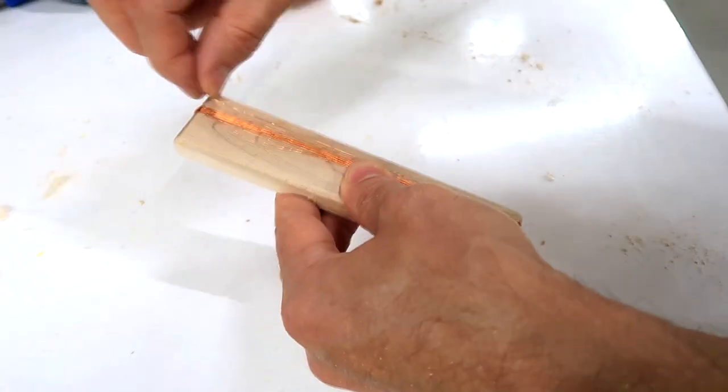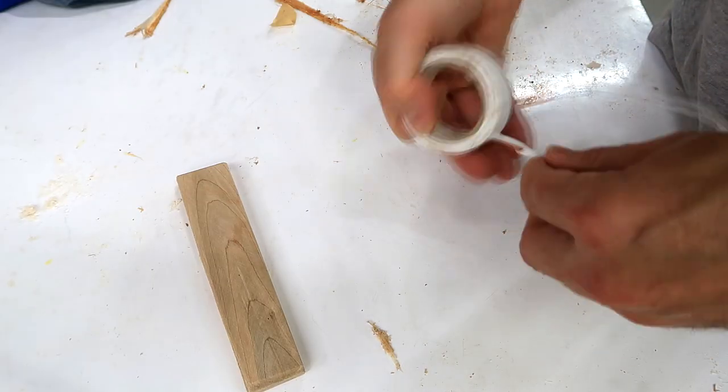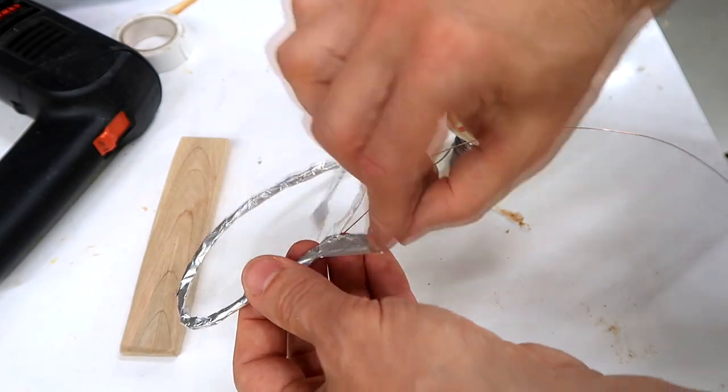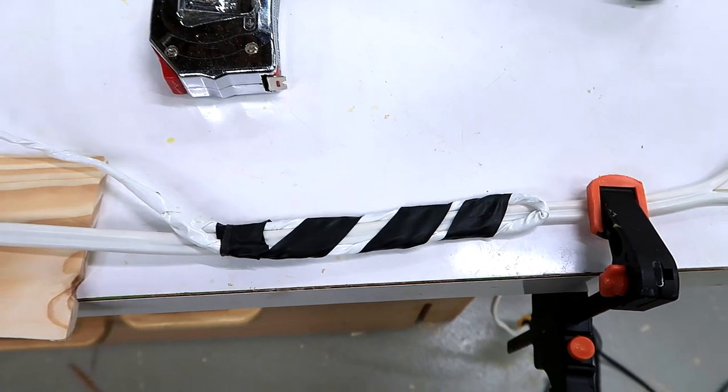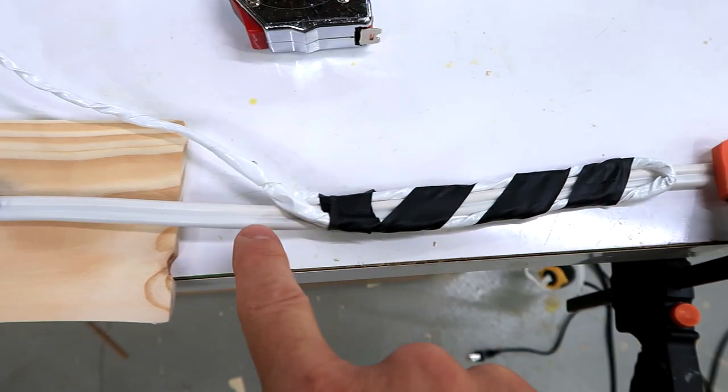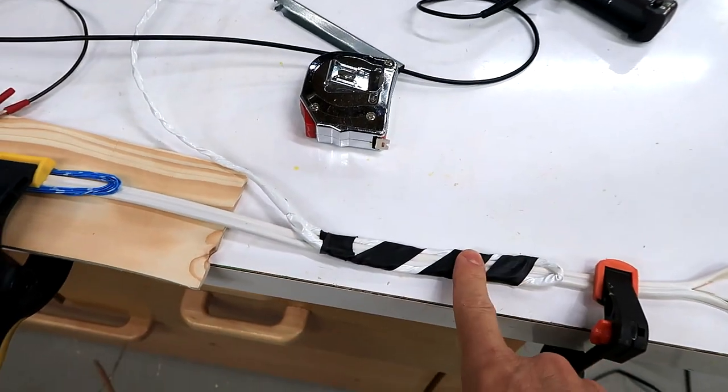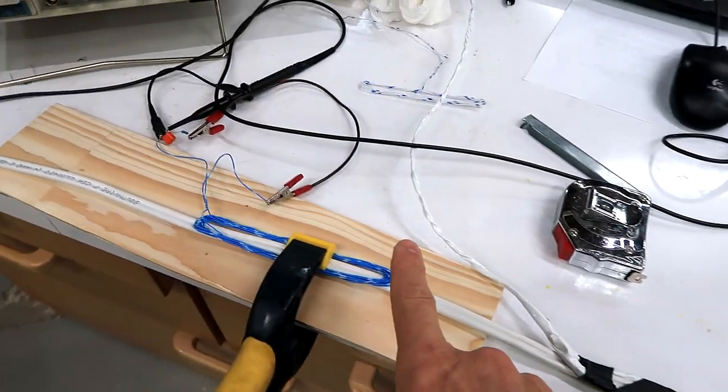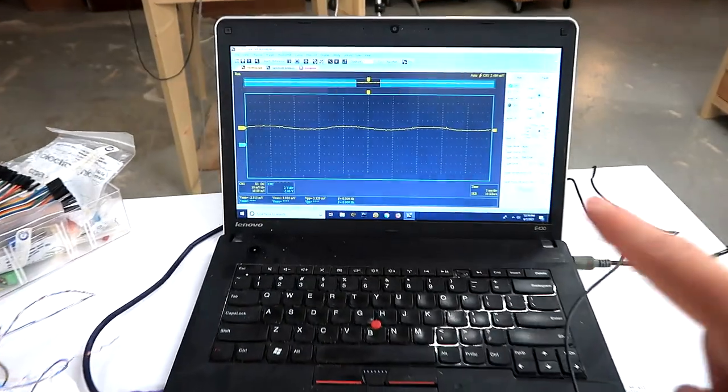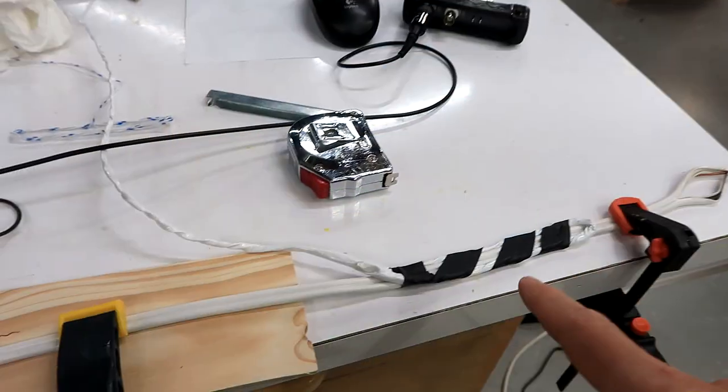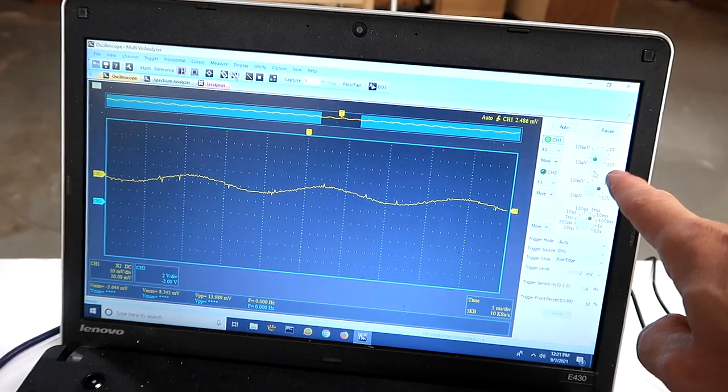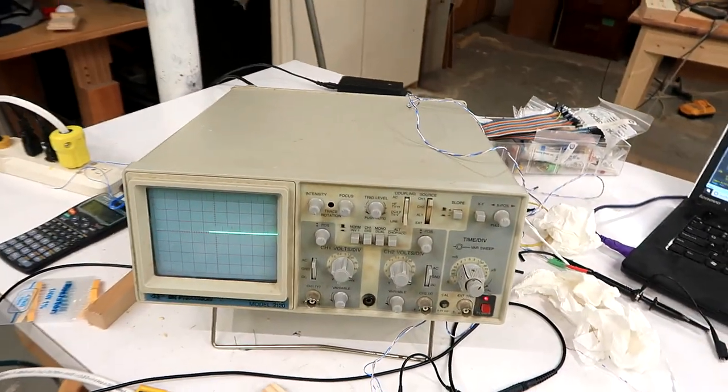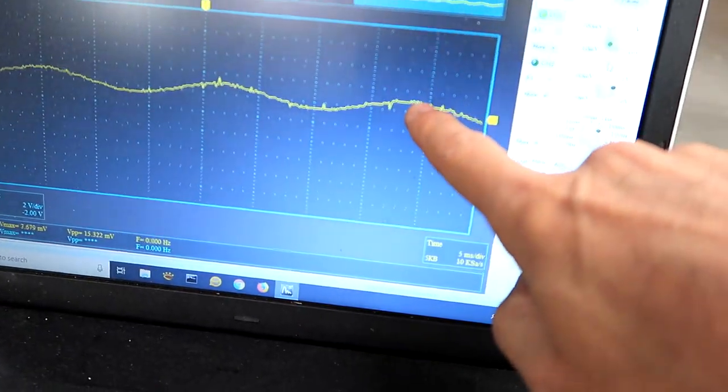Then I made a sense coil, this one with 20 turns of magnet wire, and I wrapped that in tape, then wrapped it in tin foil, and then wrapped it in tape again to make a shielded sense coil. This coil gives me a much stronger signal. Right now I've got this hooked up to my cheap digital oscilloscope on the laptop, and you can see the signal's not very big. This analog scope is much better for this sort of thing, it's just a lot quicker and more sensitive.